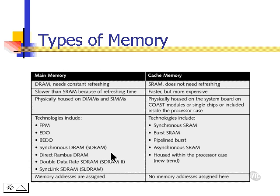When we compare DRAM with SRAM, we notice a few things. DRAM needs constant refreshing, which makes it slower than SRAM. SRAM doesn't need refreshing, but it's more expensive.